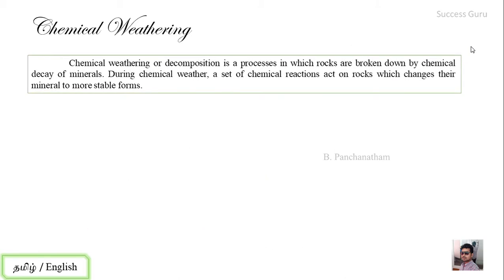Chemical weathering, or decomposition, is a process in which rocks are broken down by chemical decay of minerals. In the last class, we covered physical weathering, which is just disintegration of rocks. Chemical weathering, by contrast, involves rocks being broken down by chemical composition — that is, minerals are decomposed.